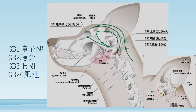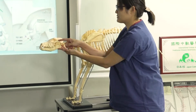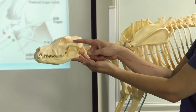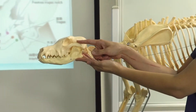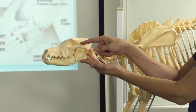GB1 is at the outer canthus at the border of the orbital margin.